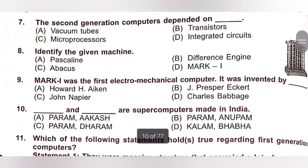Question 7: The second generation computers depended on — A. Vacuum tubes, B. Transistors, C. Microprocessor, D. Integrated circuit. The second generation computers depended on transistors. Option B is the correct answer.